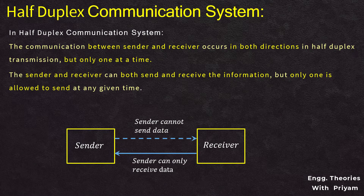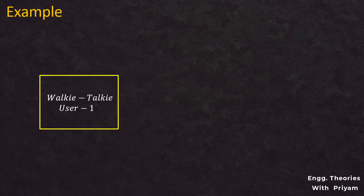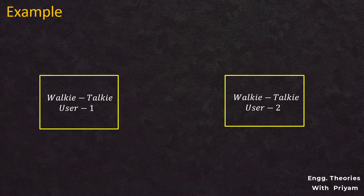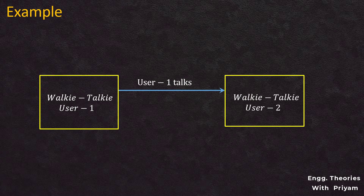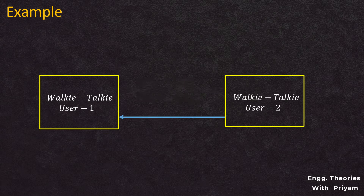A walkie-talkie is a typical example of a half duplex device. It has a push-to-talk button that turns on the transmitter but turns off the receiver. When user one pushes the button, the speaker in their walkie-talkie turns into a microphone, allowing them to talk. User two can only listen but cannot talk back. When user one finishes and says 'over,' they push the button to switch back to speaker mode, and then user two can speak while user one listens.